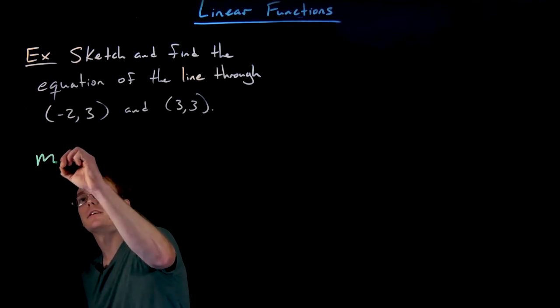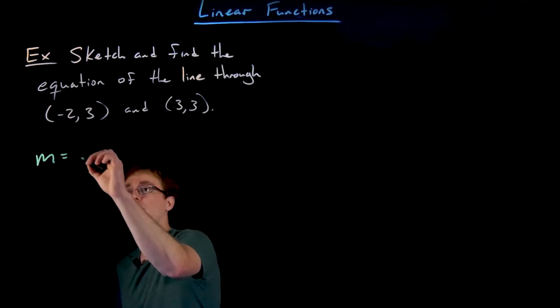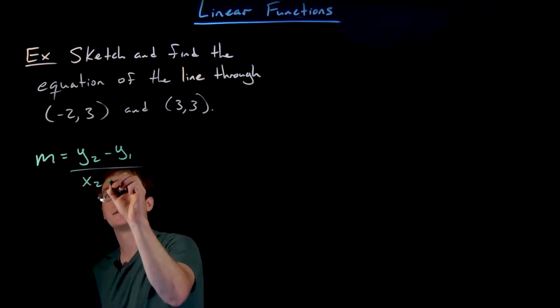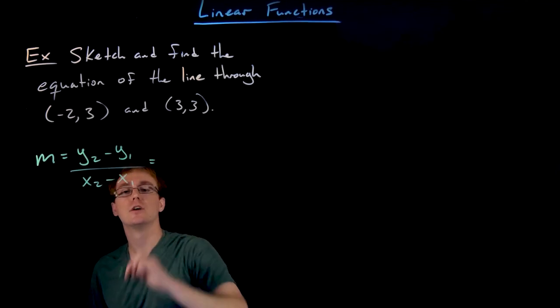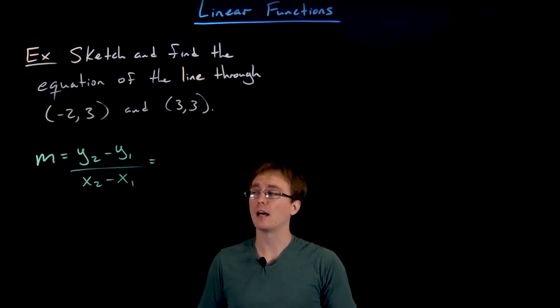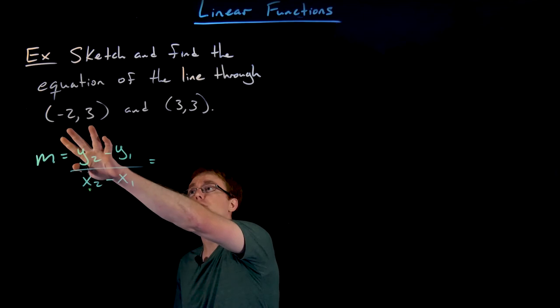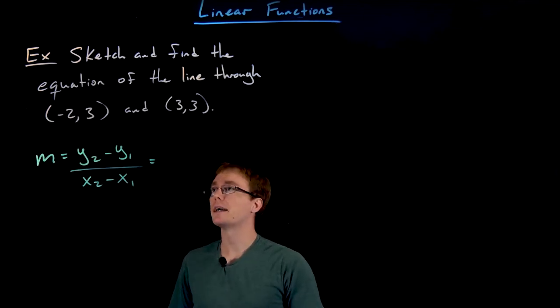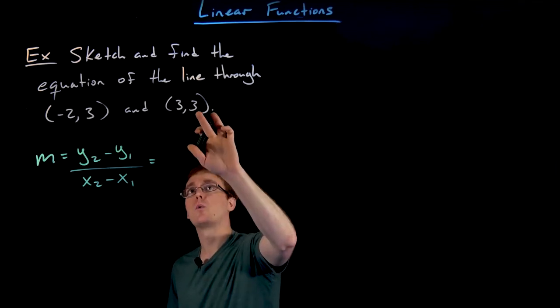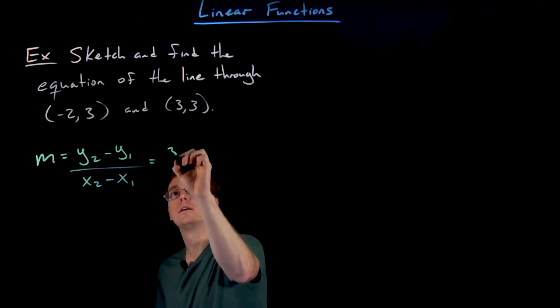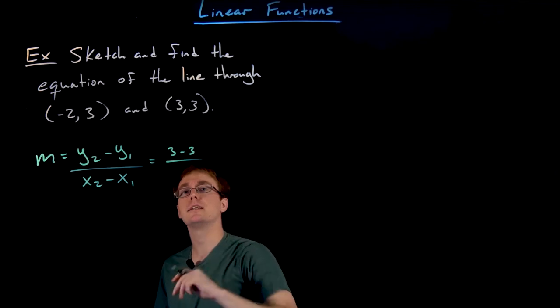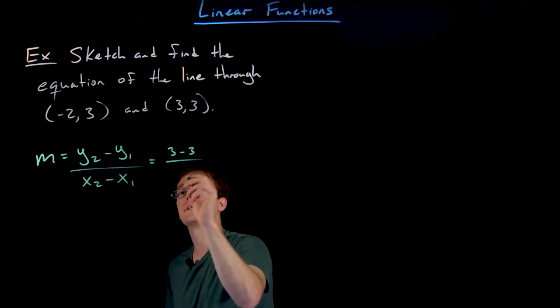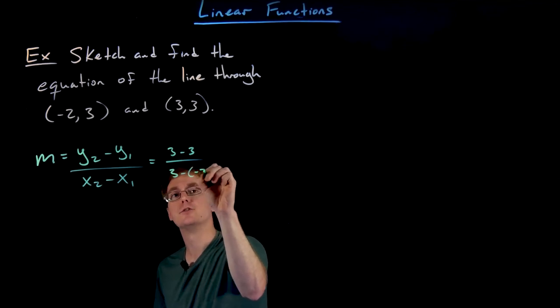We know the first thing we have to find is the slope of our line, which we can do using our slope formula. The change in y divided by the change in x will always give us the slope of our line. If we think of this first point as (x₁, y₁) and our second point as (x₂, y₂), then the difference between our y values, y₂ minus y₁, will be 3 minus 3 in the numerator. And the difference between our x values will look like 3 minus (-2) in the denominator.